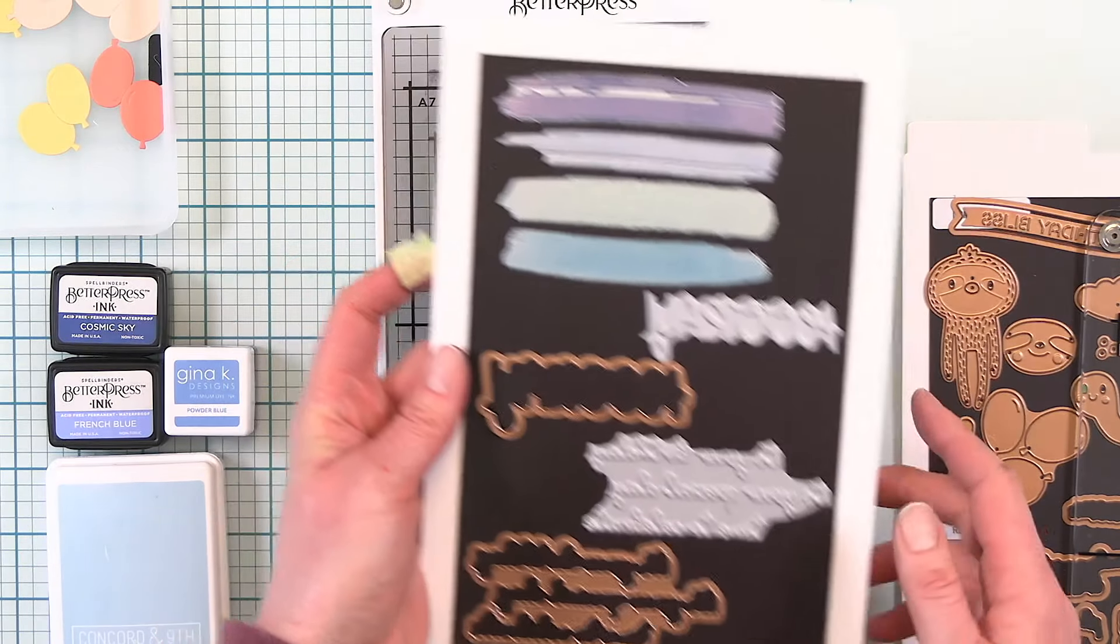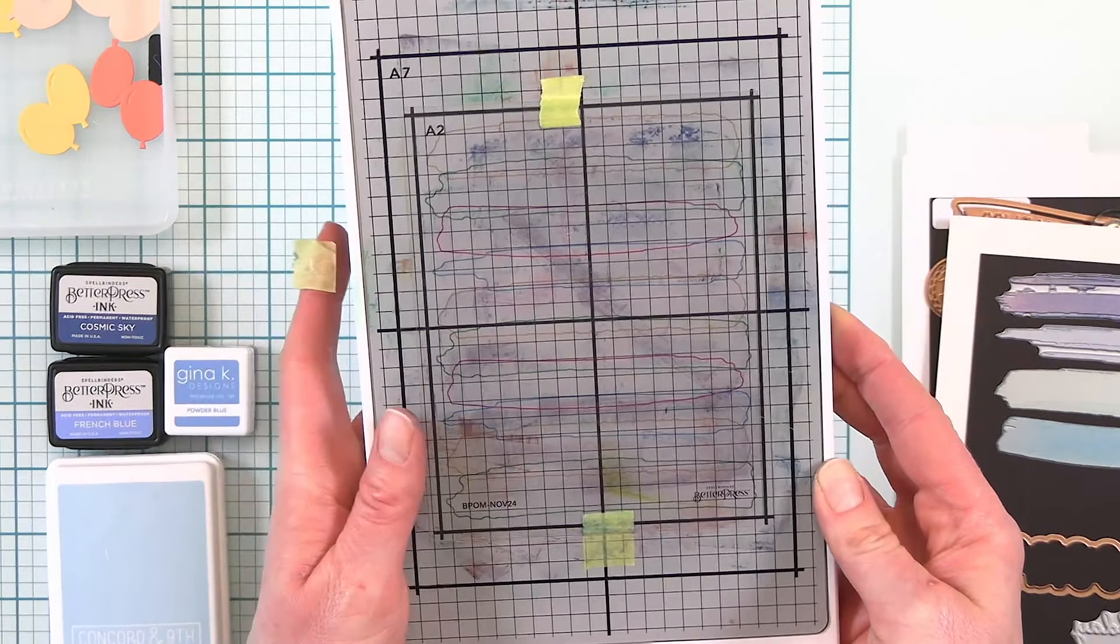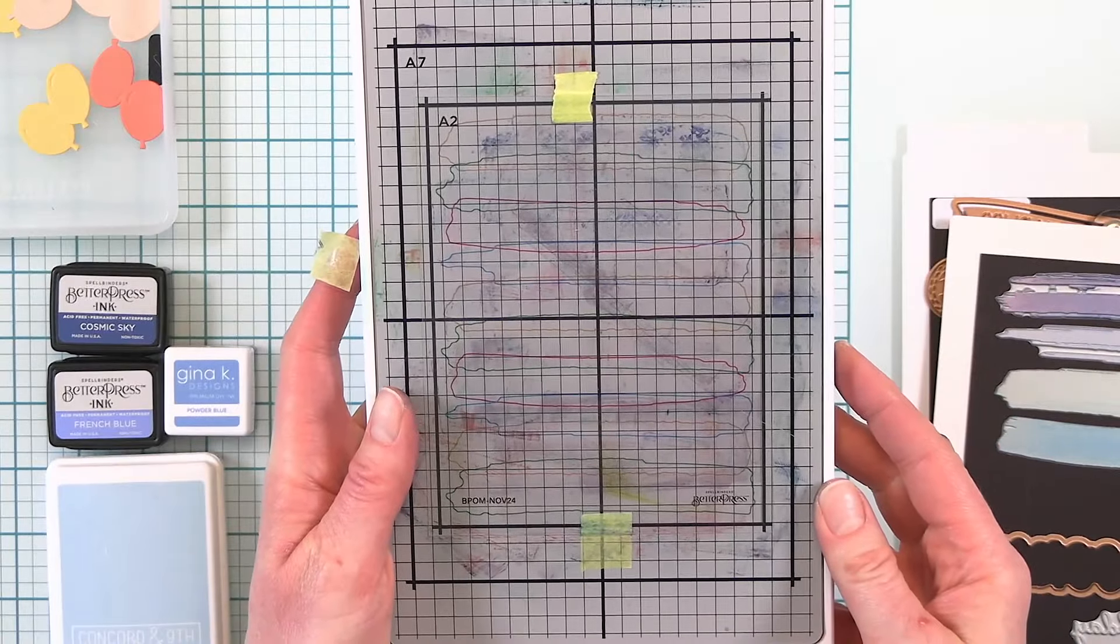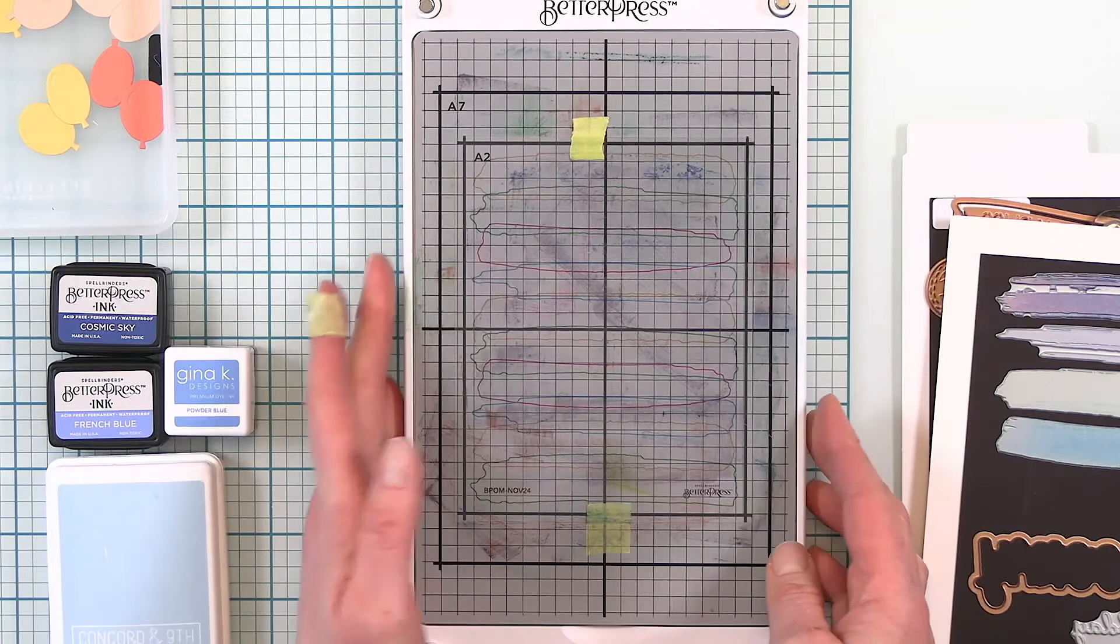The fun thing about this set is that there is a registration template which is a sheet of acetate that has the outlines on there so that you can line these up perfectly to create a painted background and that's what I'm using today.